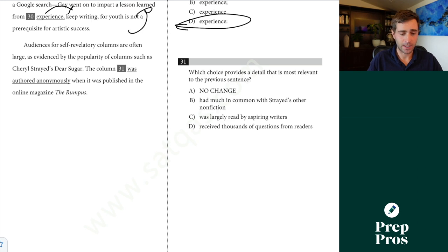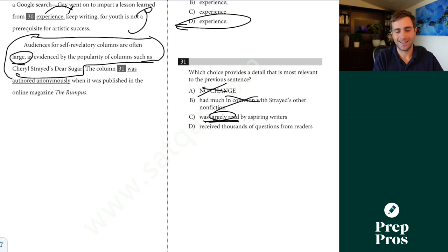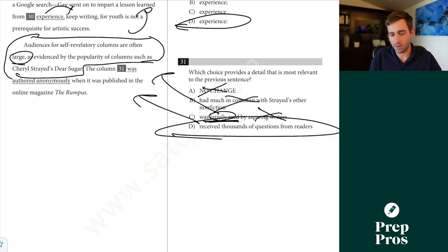31, which choice provides a detail that is most relevant to the previous sentence? So similar question, but we've got really small piece of context that we have to deal with here. Audiences for self-revelatory columns are often large, as evidenced by the popularity of columns such as Cheryl Strayed's Dear Sugar. The column was authored anonymously. This has nothing to do with that prior sentence, and we don't say that it was authored anonymously. Had much in common with Strayed's other nonfiction. That has nothing to do with the fact that her audience is large. Was largely read by aspiring writers. This is your trap answer. Large, we see large, we're like, ooh, that should be right. This does not necessarily say that this is large. This is also introducing specific information which we cannot defend from the sentence there. This is the only one that we 100% can defend is giving a detail that's relevant to what we see. You have to be really, really nitpicky with these questions.